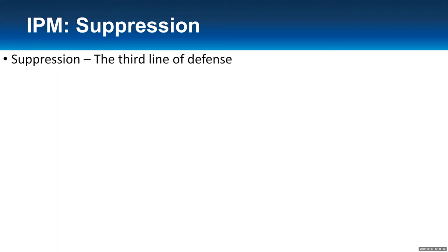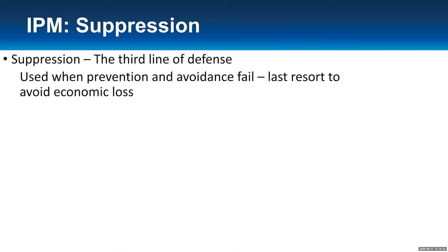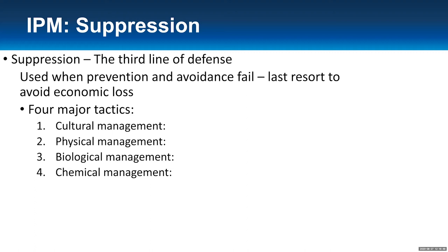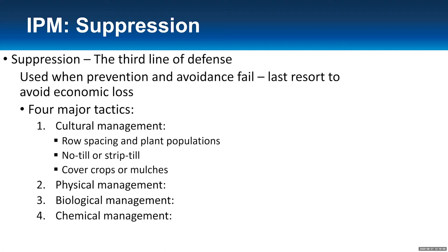The third step — out of order in PAMS — is Suppression, your third line of defense. That's what you use when your prevention and avoidance fail entirely, to avoid economic loss and yield impact. There are four major tactics within suppression: cultural management, physical management, biological management, and chemical management. Cultural management includes row spacing and plant populations, as well as no-till or strip-till. No-till is good for soil health and crop residue, but you might also have a weed population that affects your coming year, so if you have a lot of weeds, you might not want to do no-till.